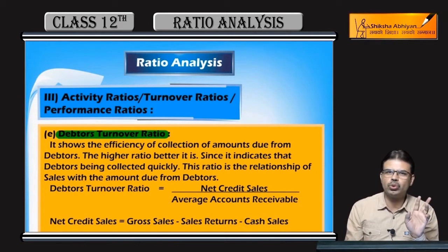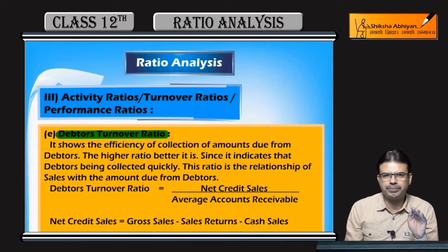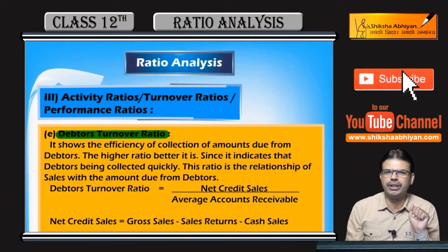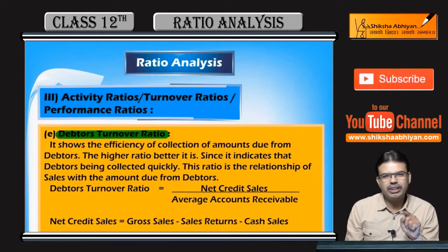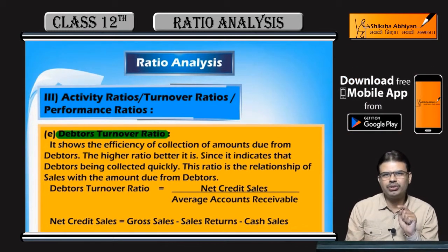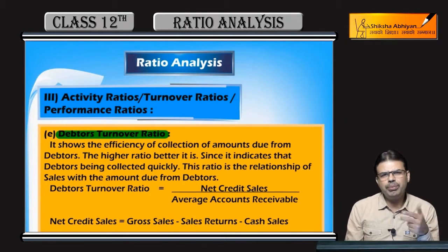Think about which firm is better. Three firms have the same type of business, only the credit policy is different. So automatically, the first firm gives more credit and the money is blocked longer. In different types of industry, there are different types of debtors.